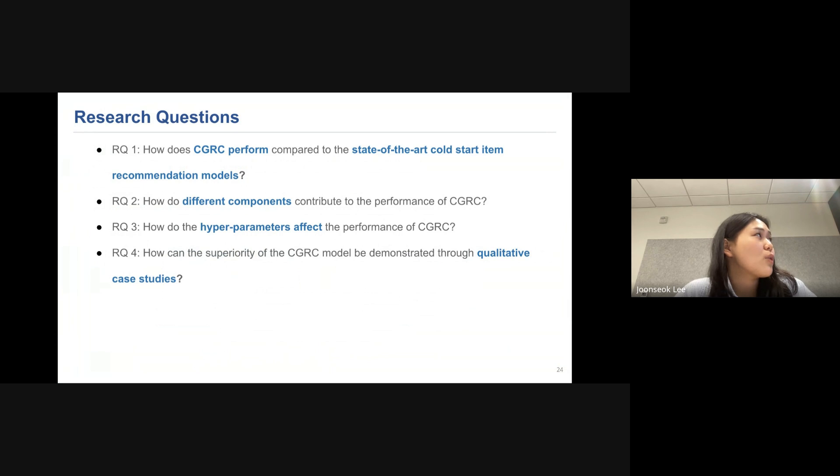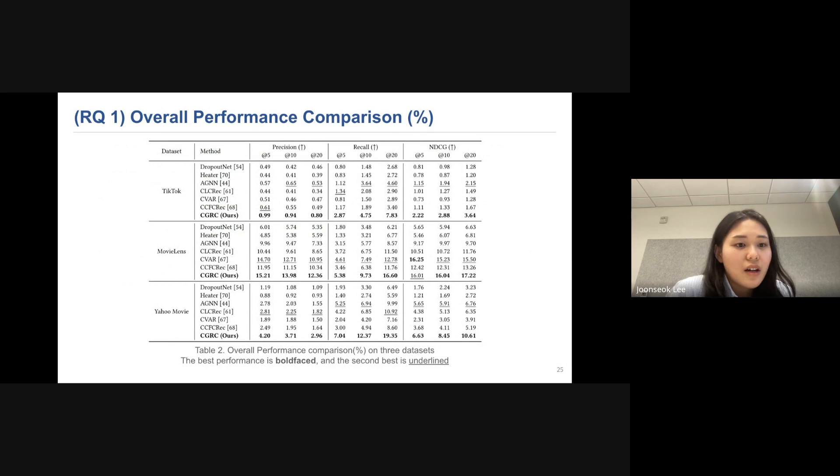So there are four research questions we want to ask and answer. The first question is, how does CGRC perform compared to the state-of-the-art cold start item recommendation models? And we also want to see how different components contribute to the performance of CGRC. And also, we want to see the effect of the hyperparameters. And lastly, we want to see how can the superiority of the CGRC model be demonstrated through qualitative case studies. So this is the overall performance comparison. And as you see in Table 2, our model CGRC consistently outperforms the baseline methods.